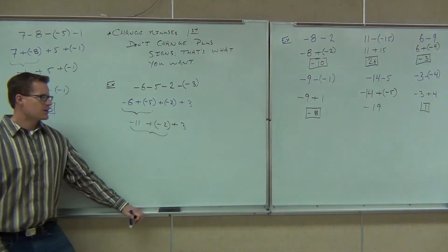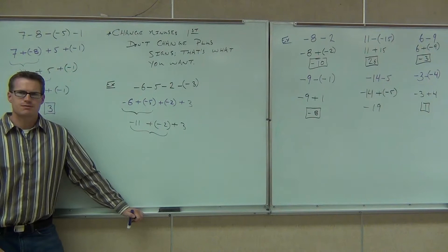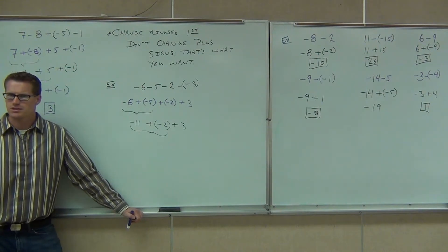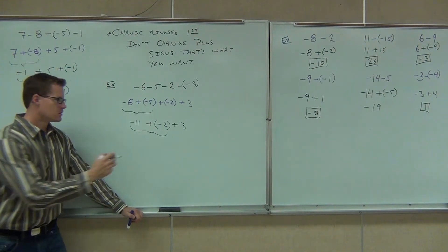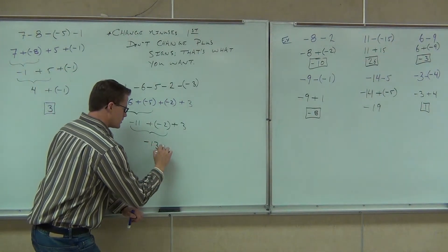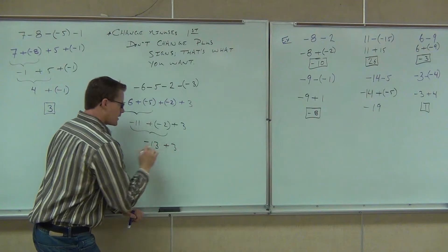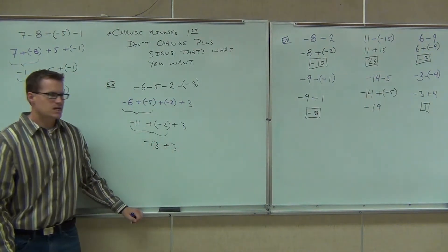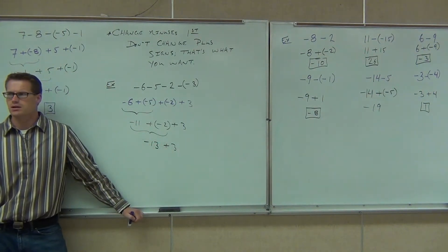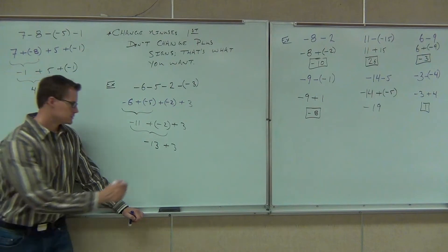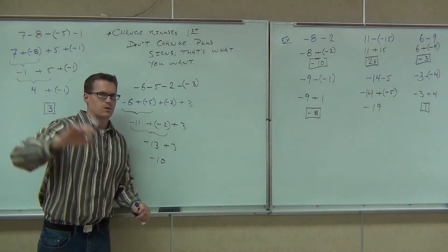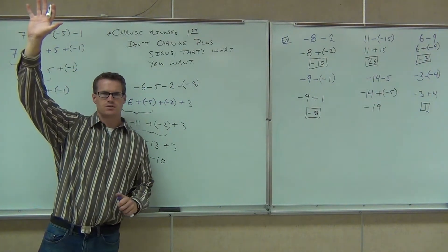We've got negative 11 plus negative 2 now. Again, we have the same signs. Negative 13 plus 3. Show of hands — how many people got negative 10?